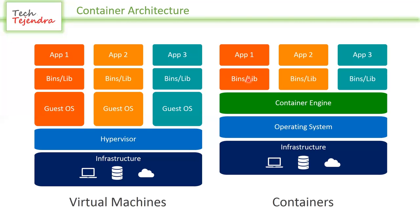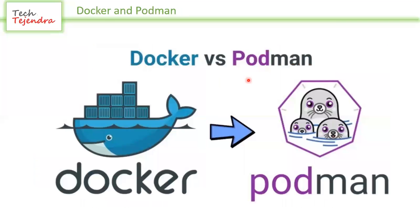Docker and Podman — both are container tools. Whether you use Docker or Podman, both do the same things. Docker is the most popular one. Podman is a product of Red Hat Enterprise Linux and is currently not as popular as Docker. However, for the EX180 exam for Red Hat, they will use Podman only. Docker and Podman are very much identical with only very minor differences between them.